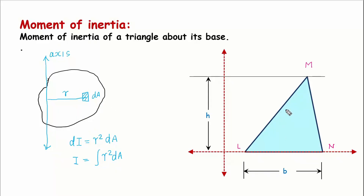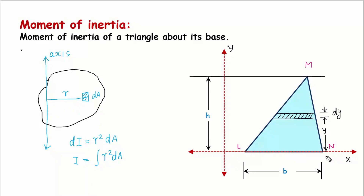So like that, we shall consider a small area and its distance from the axis. I am going to consider a thin strip of small area. This thin strip has an infinitesimally small area, and the thickness of this thin strip is dY — dY because it is along the y-axis. The distance of this thin strip from the base of the triangle I am going to call as y, and the height of the triangle is h, so the distance from the tip would be h minus y.